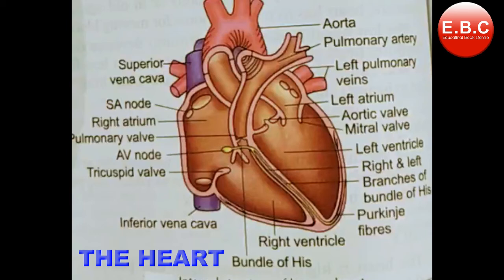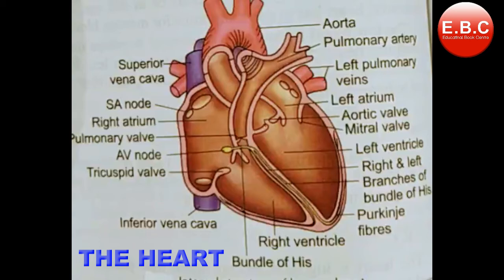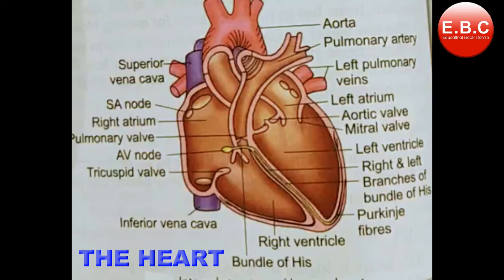The lower end of the heart inclines towards the left. Heart is enclosed in the pericardium, which is a double layer membrane sac, and it protects the heart from mechanical injury.